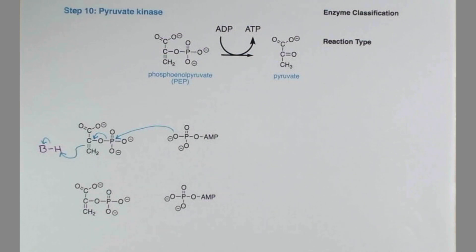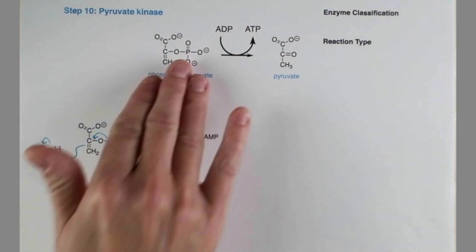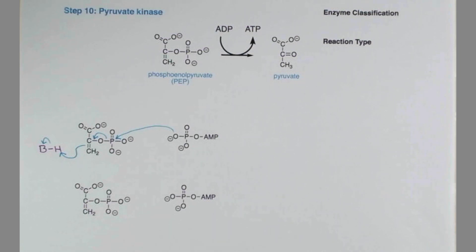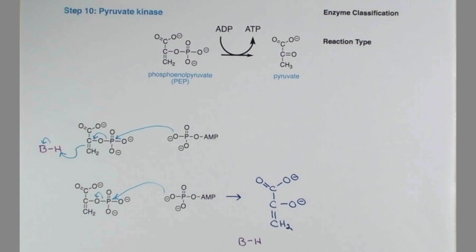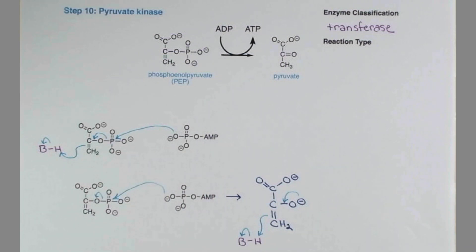That's a lot of arrow pushing for one step. Viewing the arrow pushing slightly differently can help us see why PEP is such a great phosphate group transfer agent. So let's just attack the phosphate and leave a negative charge on this oxygen instead. The compound that will form, showing the attack this way, is an enolate. Enols and enolates tend to tautomerize to their more stable keto forms, so this tautomerization is also pushing this reaction forward. We're transferring a phosphate group, and the enzyme is a transferase. Because we're substituting a new phosphate group onto ADP, this reaction type is nucleophilic substitution.